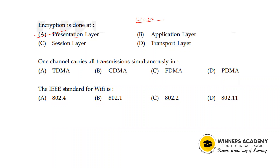One channel carries all transmissions simultaneously — what is the multiple access technique? The options are Time Division, Code Division, and Frequency Division. Time Division gives one time slot; Frequency Division uses different frequencies. Code Division Multiple Access (CDMA) allows transmissions on the same channel using different codes.